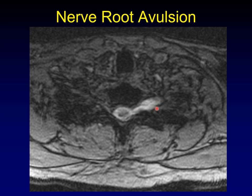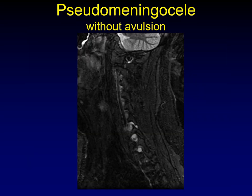It's possible to get a pseudomeningocele without avulsion — here you can see a central nerve still present in the middle of the enlarged CSF space running through the neuroforamen, displaced but intact. These findings are often multilevel: pseudomeningoceles and nerve root avulsions can occur at multiple levels simultaneously.